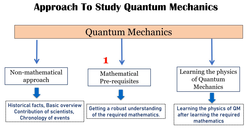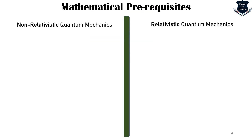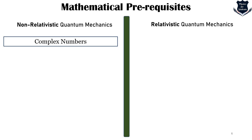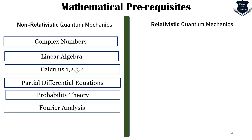First we will understand what mathematics we need to know and what books cover it. We will divide this into non-relativistic quantum mechanics and relativistic quantum mechanics. For non-relativistic quantum mechanics — which is the general quantum mechanics we are taking — you should learn complex numbers, linear algebra, calculus 1 through 4, partial differential equations, probability theory, and a little bit of Fourier analysis. These six subjects are a must for learning quantum mechanics at a grad or undergrad level.